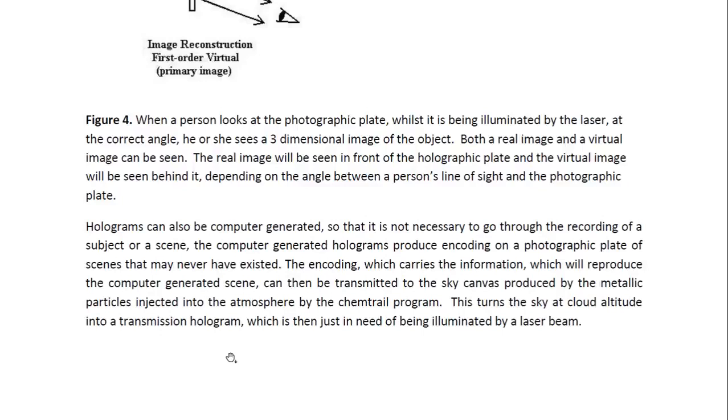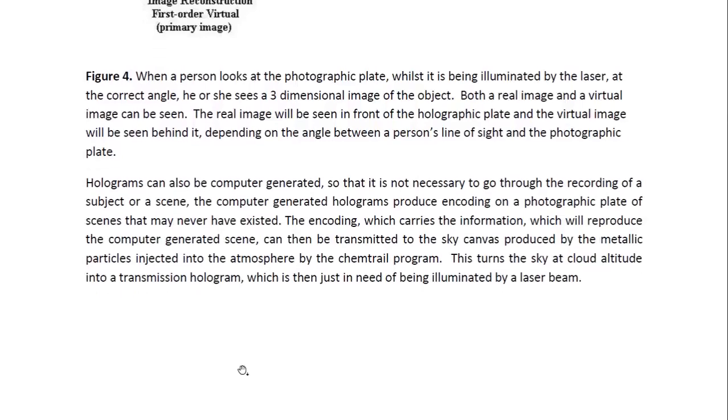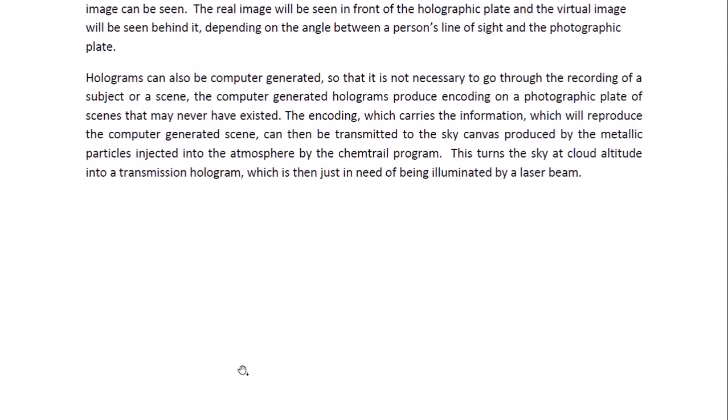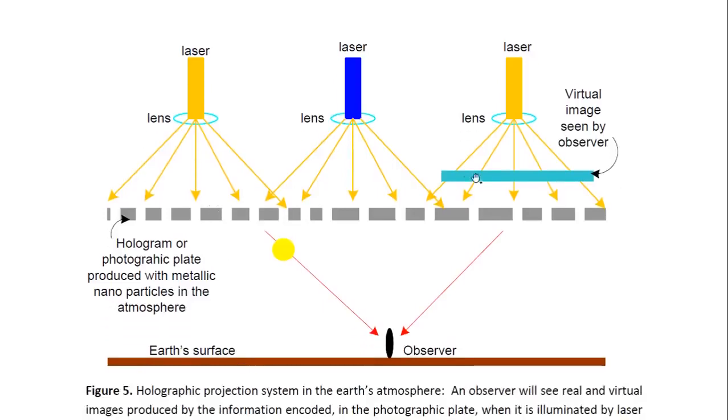The encoding which carries the information which will reproduce the computer generated scene can then be transmitted to the sky canvas produced by the metallic particles injected into the atmosphere by the chemtrail program. This turns the sky at cloud altitude into a transmission hologram, which is then just in need of being illuminated by a laser beam or several laser beams side by side, probably a whole array of them.